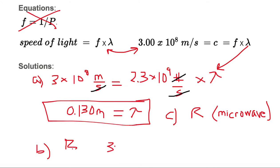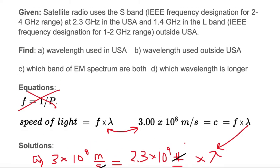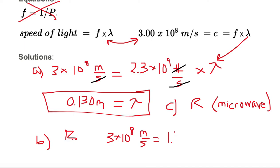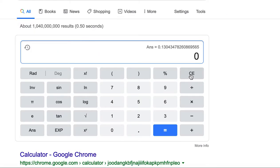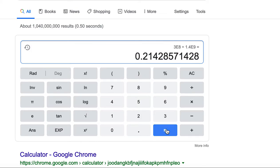So we have 3 times 10 to the 8th meters per second, with meters on top divided by seconds. That equals 1.4 gigahertz, which is 1.4 times 10 to the 9th. Hertz is again number per second — it always has number in the numerator as a placeholder — times wavelength. We're solving for wavelength, so we divide both sides by 1.4 times 10 to the 9th. On the calculator: 3 EE 8 divided by 1.4 EE 9 equals 0.214.